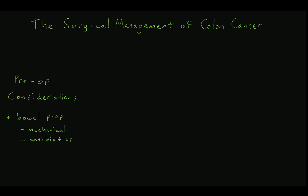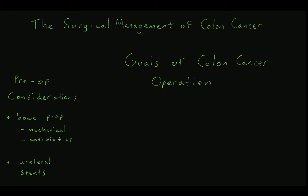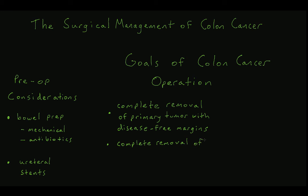Given the anatomic relationship of the colon to the ureters, the surgeon may also opt to have ureteral stents placed before the operation. Ureteral stents have not been shown to reduce the incidence of ureteral injury during colon surgery, but they have been shown to allow quicker identification of a ureteral injury if that does occur. Intraoperatively, the goals of surgery for colon cancer are to achieve complete removal of the primary tumor with tumor-free margins, complete removal of the lymph nodes associated with the vascular basin of the resected colon, and, if necessary, en-bloc resection of any organs with local invasion. In general, tumor-free margins means a few centimeters of disease-free tissue on either side of the tumor.